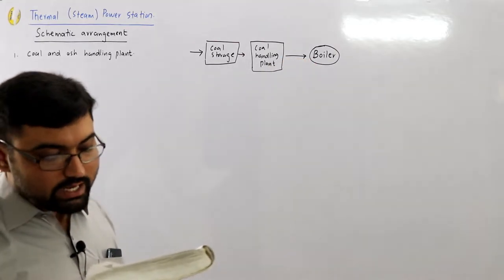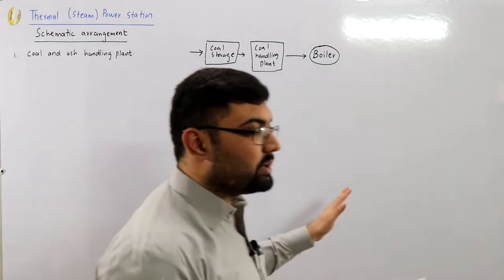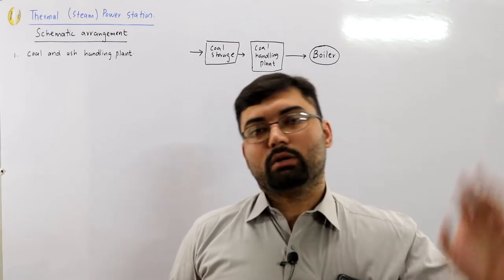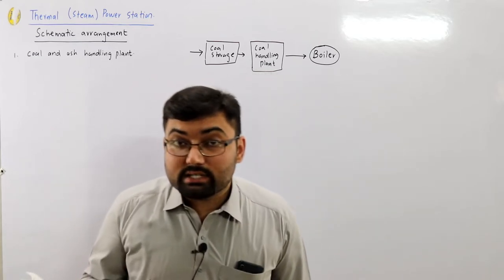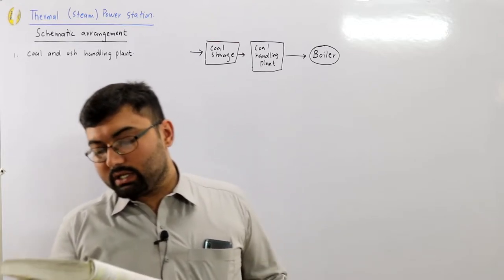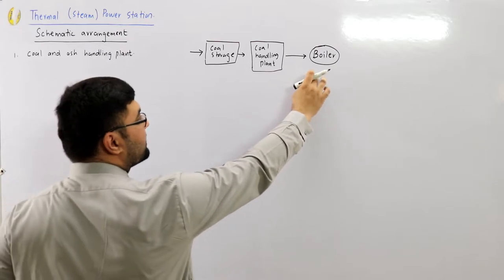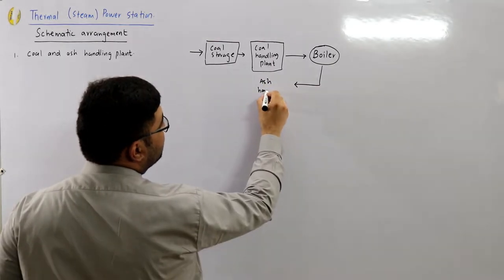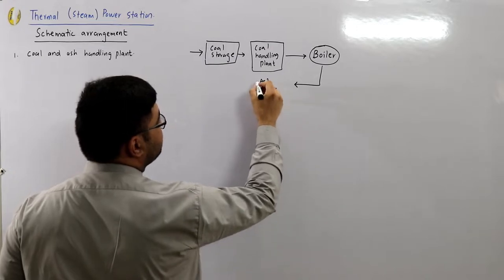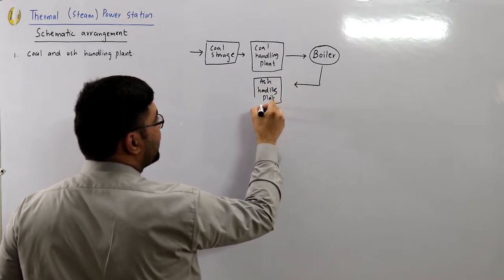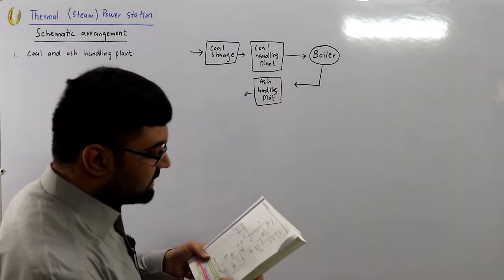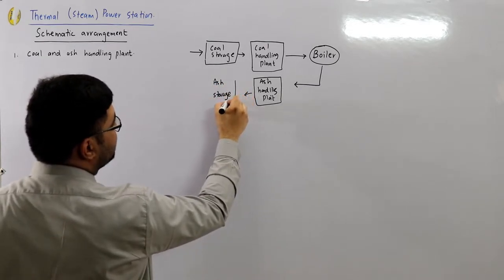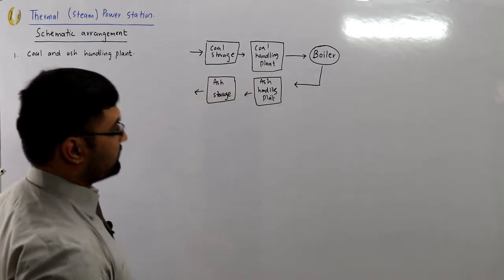The coal is burned not in the boiler itself but in a furnace — a burning chamber. The heat converts the water in the boiler into steam. After the complete combustion of coal, ash is produced. That ash is fed into the ash handling plant and then goes to the ash storage for disposal.